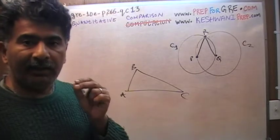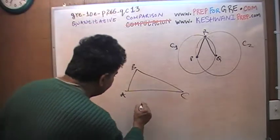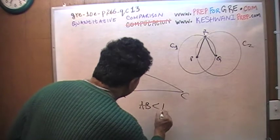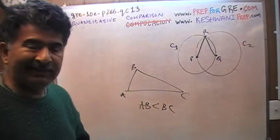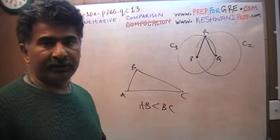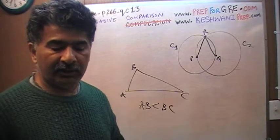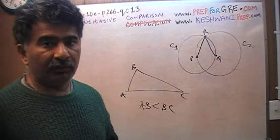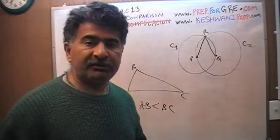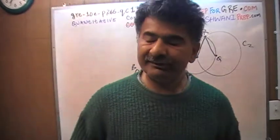But on the GRE, if I give you a picture like this, and unless I tell you that AB is smaller than BC, you cannot assume that, you cannot take those liberties on the GRE. In other words, pictures are not drawn to scale. What you see is not what you are getting here.